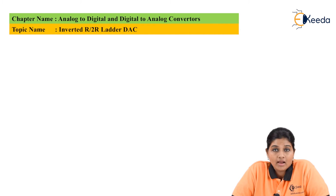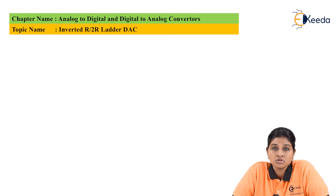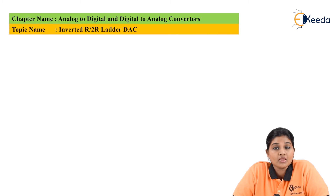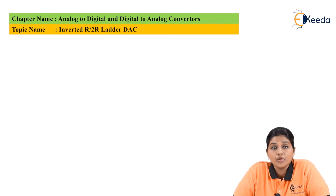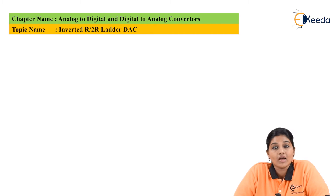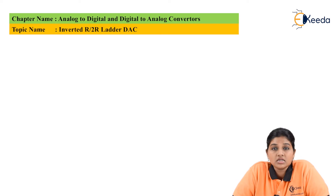In the case of R2R ladder and binary weighted resistor, both have one disadvantage: the current flowing through the circuit does not remain constant — it gets changed, causing large power dissipation. As power dissipation increases, the resistors used in the circuit get heated up. Because of the heat, it is possible that the value of the resistor gets changed, since resistor value depends upon the temperature parameter. As heat increases, temperature increases, causing alteration in resistor value, so the output may not be proper.